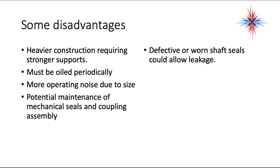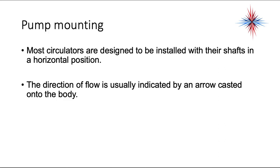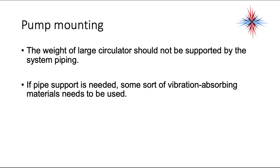Disadvantages of the three-piece circulator include heavier construction requiring stronger supports, occasional oiling, more operating noise, and potential maintenance of mechanical seals and coupling assemblies. Worn or defective shaft seals can also allow leakage. Most circulators are designed to be installed with their shafts in a horizontal position — avoid vertical installation, especially with the motor at the bottom. Flow direction is usually indicated by an arrow cast onto the body. The weight of large circulators should not be supported by the system piping.